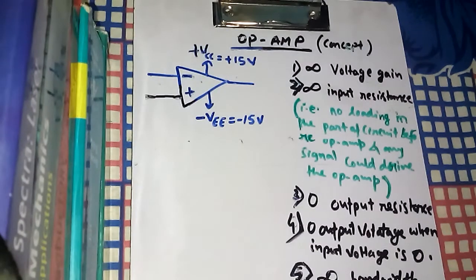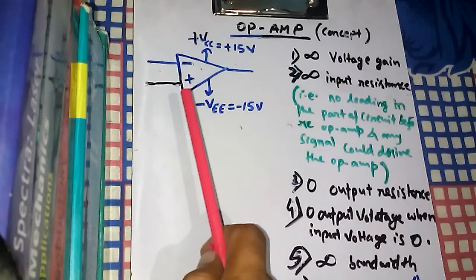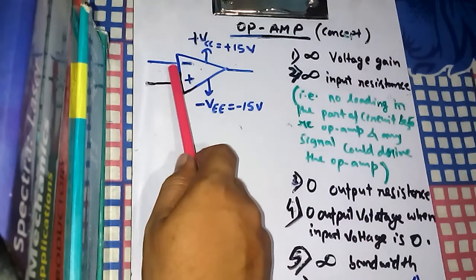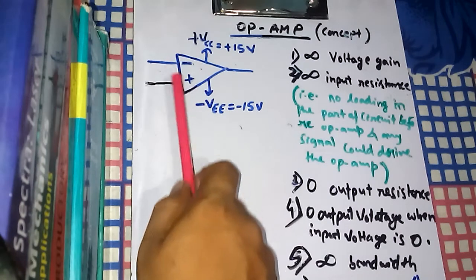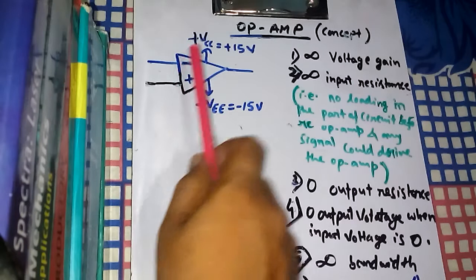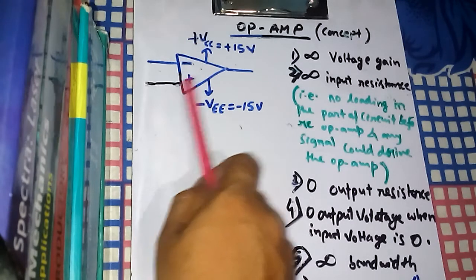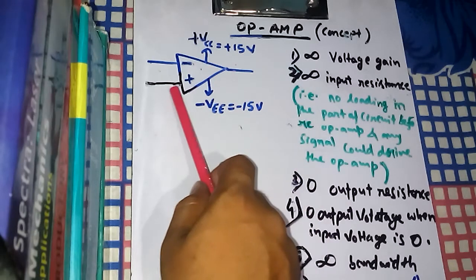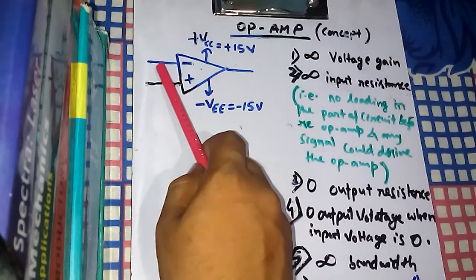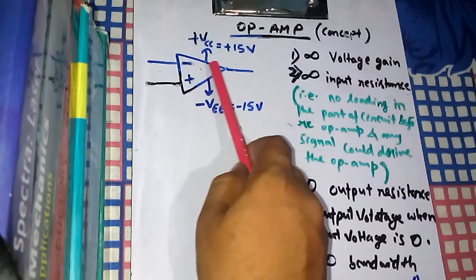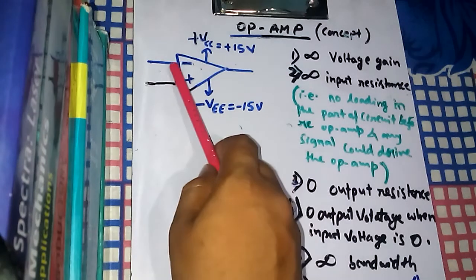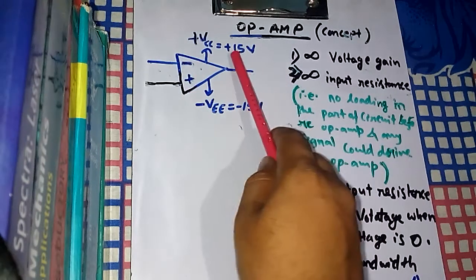Welcome to the channel. Today we will discuss the operational amplifier concept. Here we have a representative circuit for an operational amplifier. This is called the inverting input terminal and this is called the non-inverting input terminal. It is non-inverting because if you give an input signal, the output has no phase change. It is inverting because the output has a phase change of 180 degrees with respect to the input.